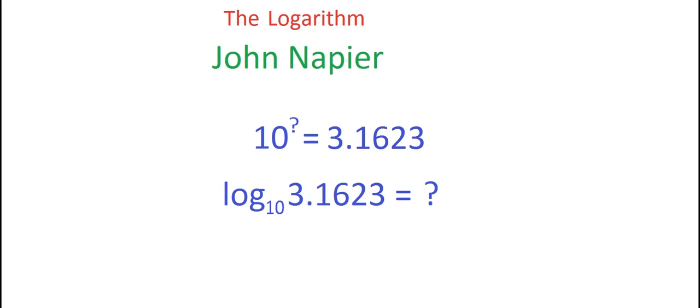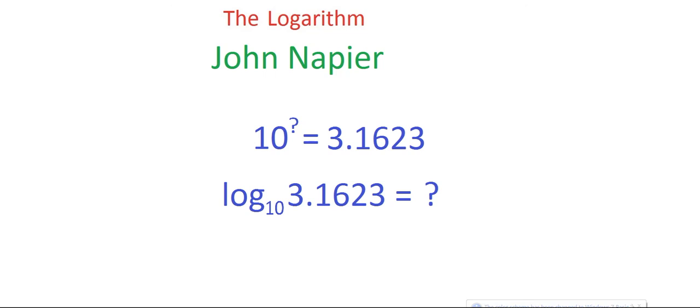Put another way, what should the logarithm of 3.1623 to the base 10 equal? There is only one sensible answer, and that is 0.5. That way, 10 to the 0.5 times 10 to the 0.5 equals 10 to the power of 0.5 plus 0.5.